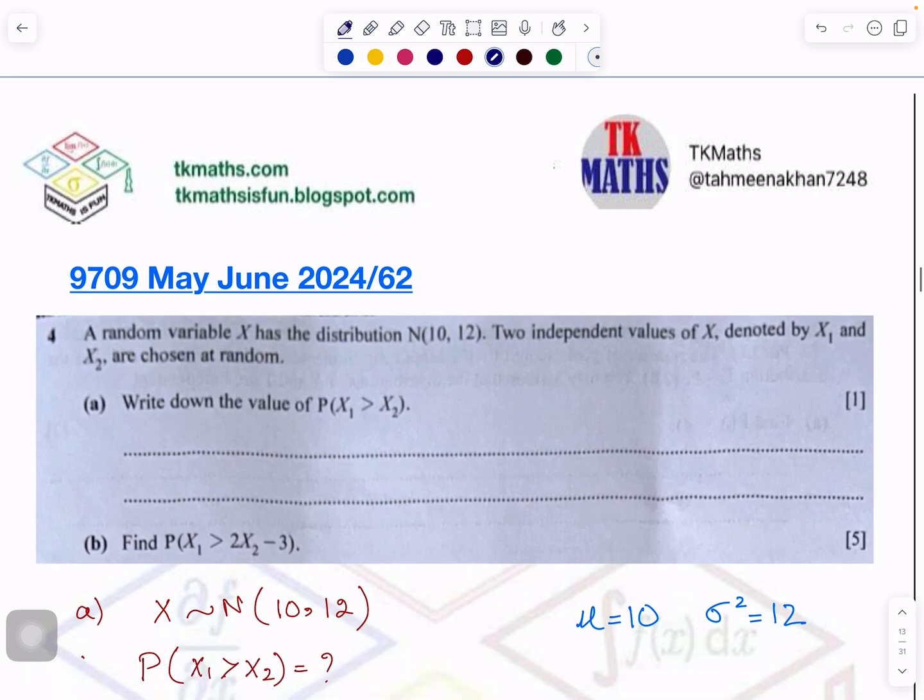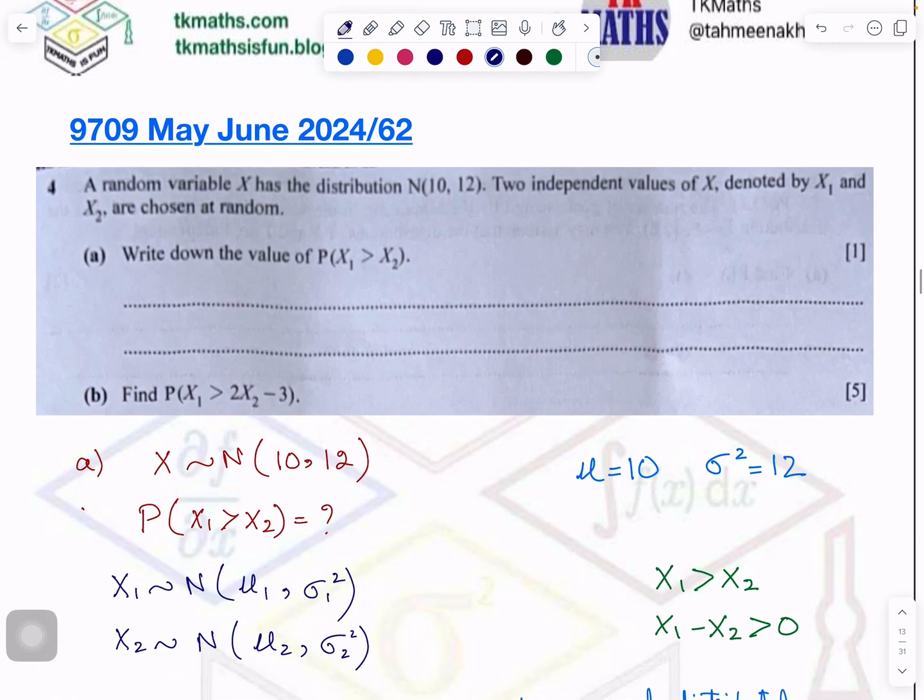One more question which is number 4. This is related to linear combination and two independent values of X, denoted by X1 and X2, which we are drawing only from the same distribution. So when you have to calculate this, it has one mark.